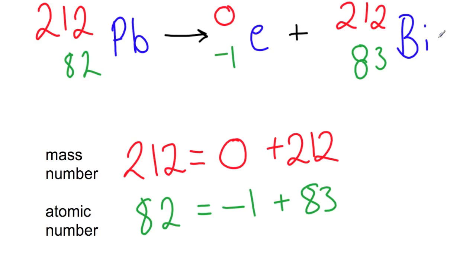So 83 minus 1 will give you the 82. So you can see here the bismuth is an atomic number 83, which is one more than what we started with, and that's because of this gain of a proton.